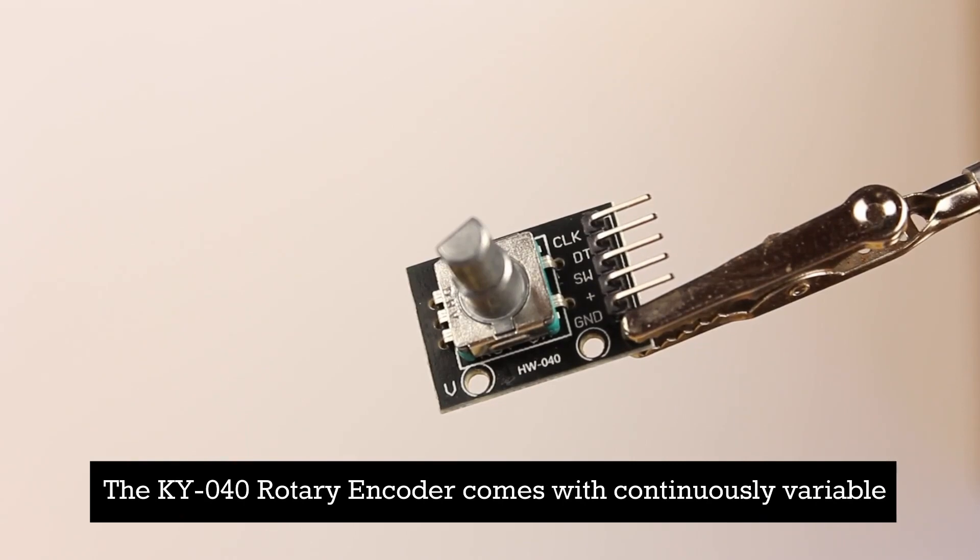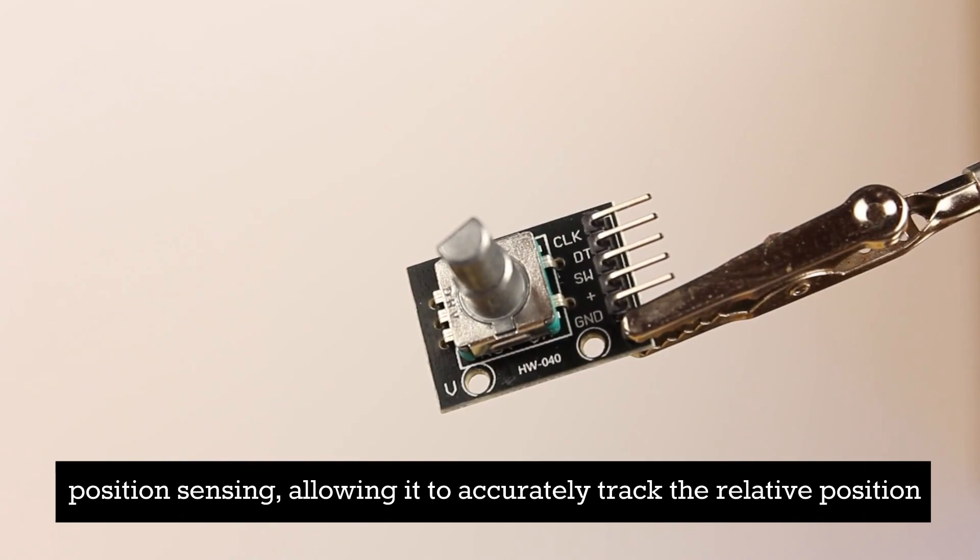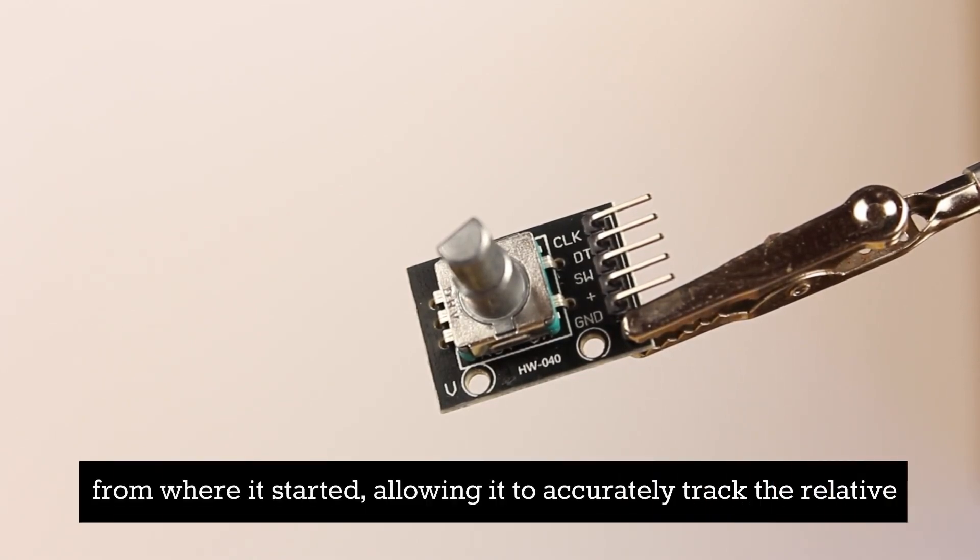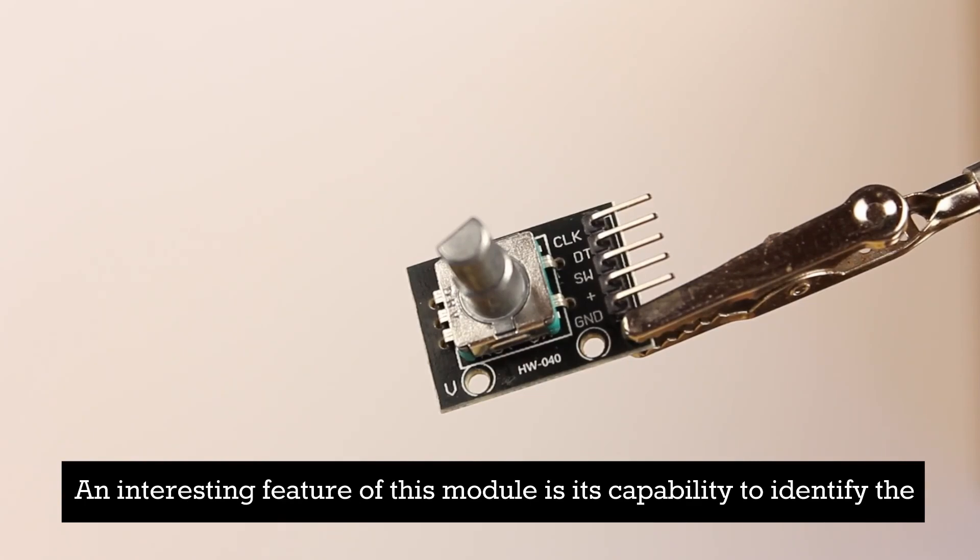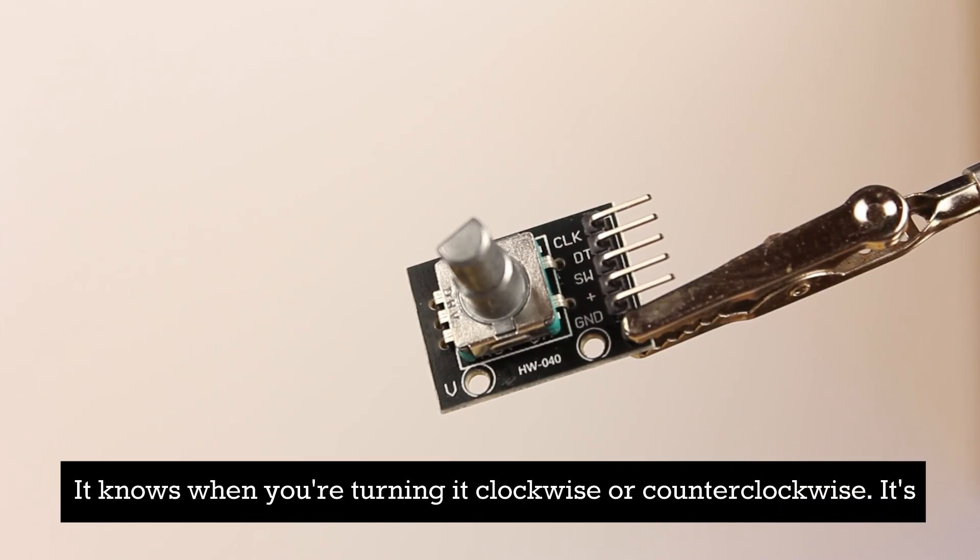The KY040 Rotary Encoder comes with continuously variable position sensing, allowing it to accurately track the relative position from where it started. An interesting feature of this module is its capability to identify the direction of rotation. It knows when you're turning it clockwise or counterclockwise.